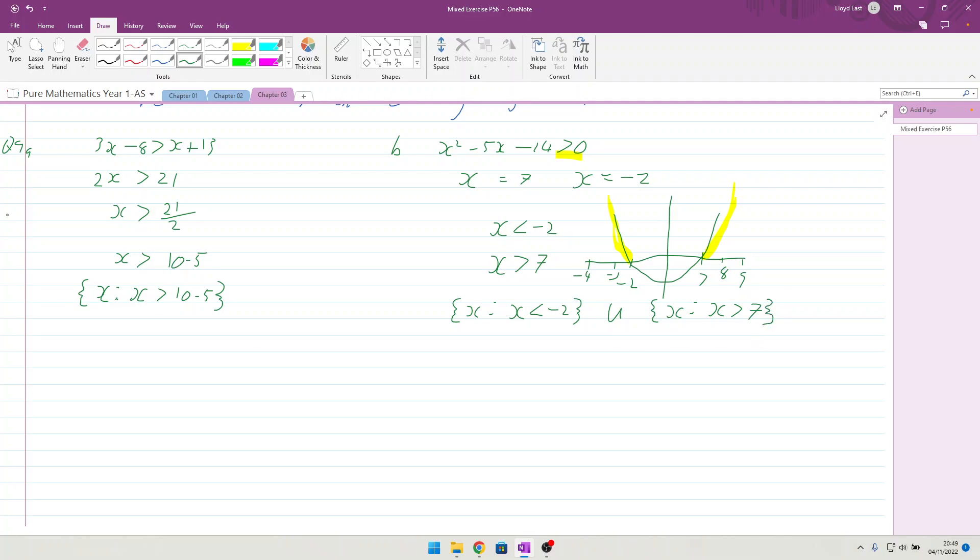Number 10 then. Question 10, find the set of values for x for which x minus 1 in brackets, x minus 4 in brackets, is greater than 2 times x minus 4 in brackets.